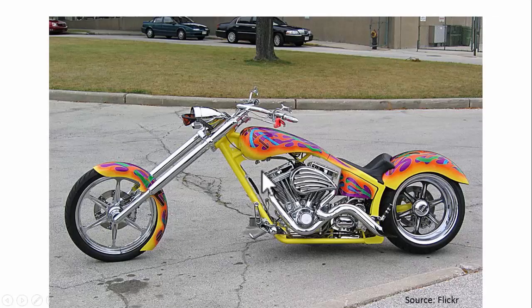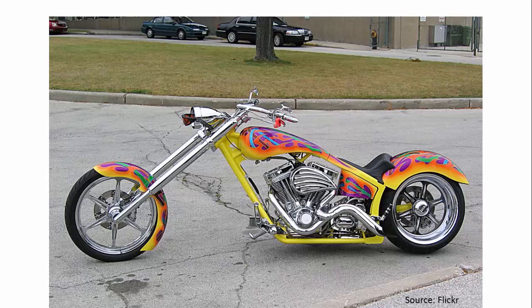For better understanding, I have shown you an image from Flickr. This shows an extreme positive caster angle. The caster angle generally helps the wheel to align with the direction of travel. This is an extreme case — usually the caster angle will be in the range of three to five degrees in modern cars.